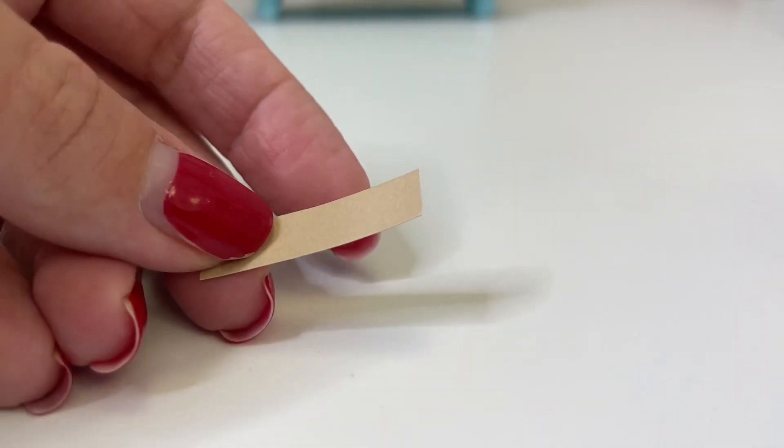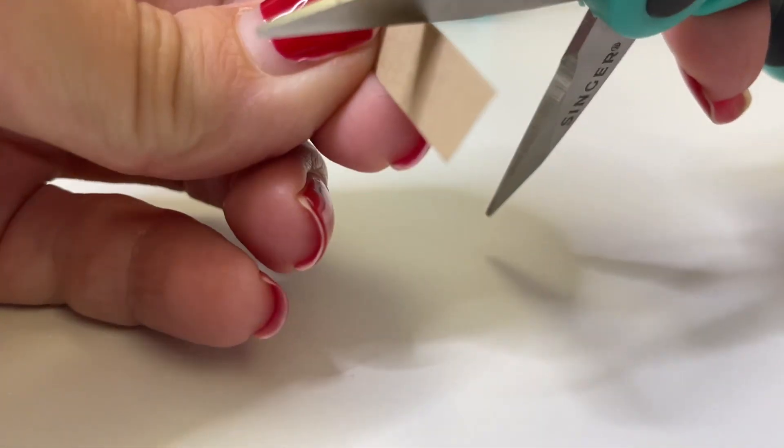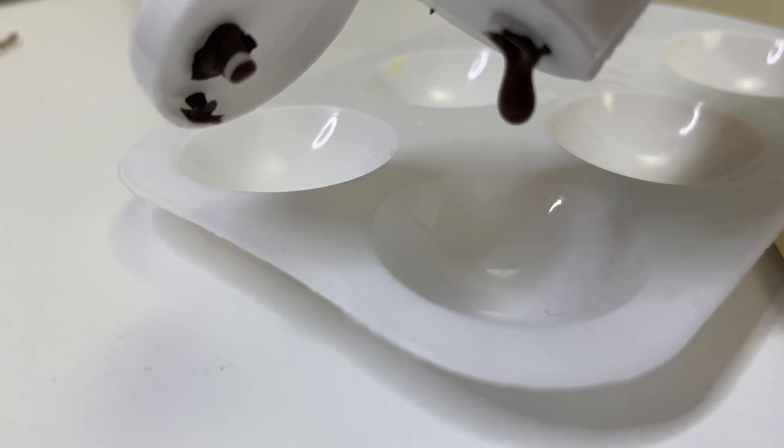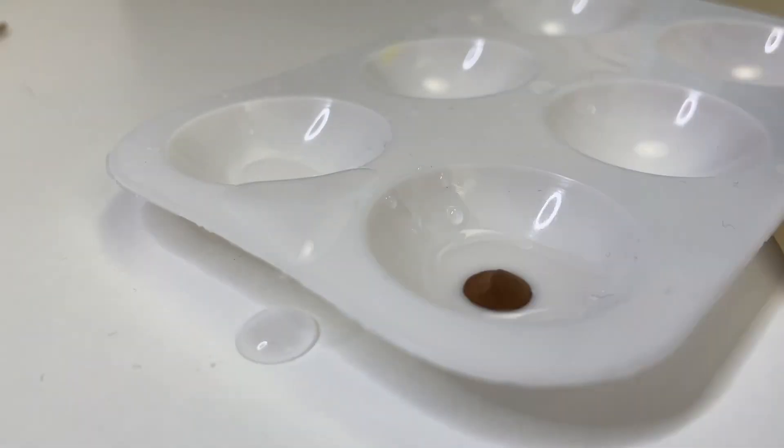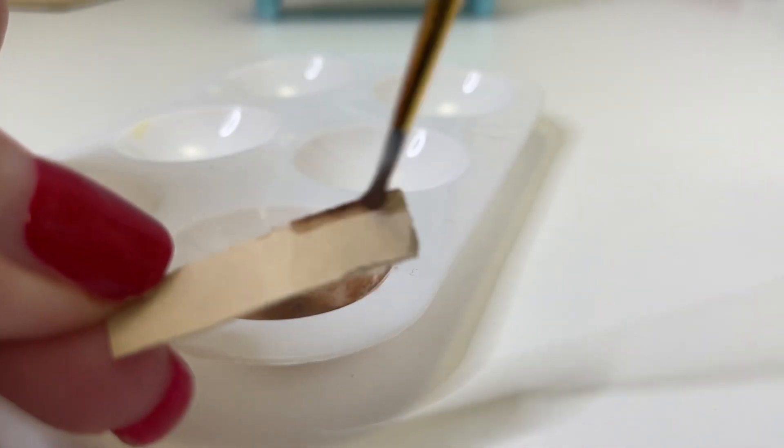And to make the paper look more aged I'm just going to use the edge of my scissors and just rub the edges to make the paper look a little bit older. And then using some brown paint with water I'm going to use that to make this paper look a little bit more aged.